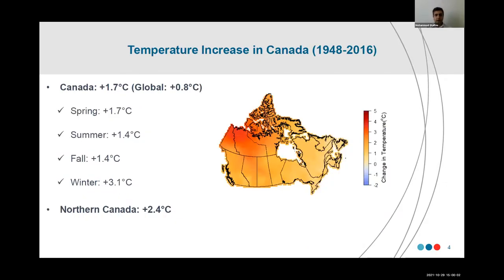Here you can see the overall temperature increase trend from 1948 until 2016 in different seasons of the year. For example, winter warming was more significant compared to spring, summer, and fall. Northern Canada on average experienced a 2.4 degrees Celsius temperature rise, whereas the global temperature rise has been around 0.8 degrees Celsius.